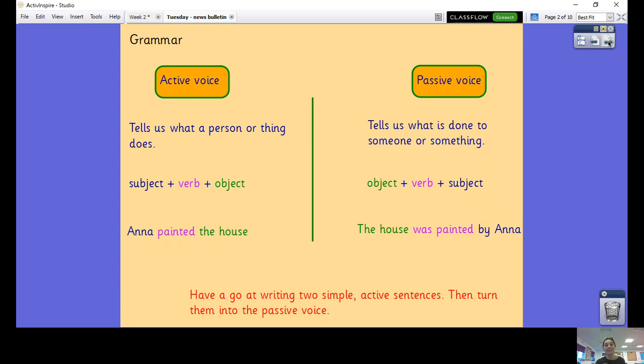If we were to turn that into the passive voice, the passive voice is telling us what is done to something or someone. Our house is going to come to the front of our sentence now because that is the thing that is having something done to it. For example, the house was painted by Anna. It's telling us that the house was painted by Anna. It's what is done to someone or something.